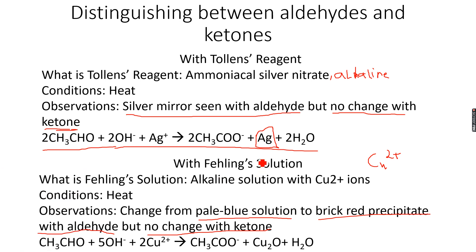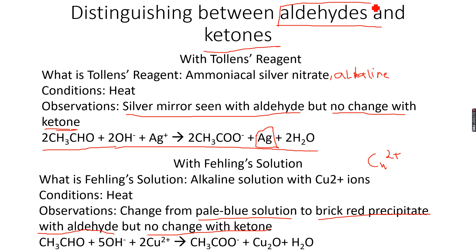Now we know how to test for a carbonyl compound. The DNPH test gives the same result with both aldehydes and ketones, whereas the Tollens and Fehling's tests give a particular observation with aldehydes and a particular observation with ketones.